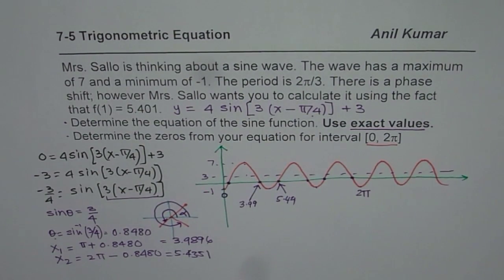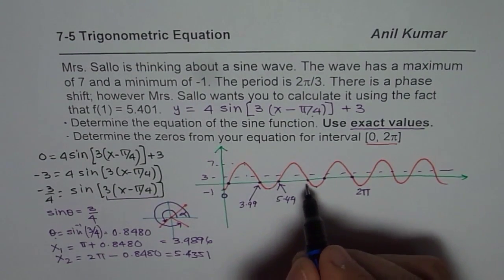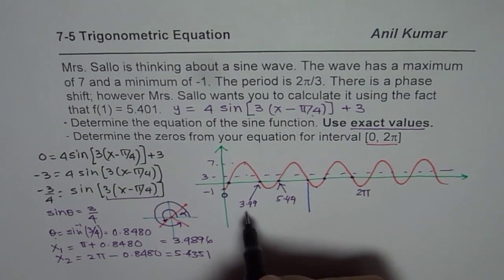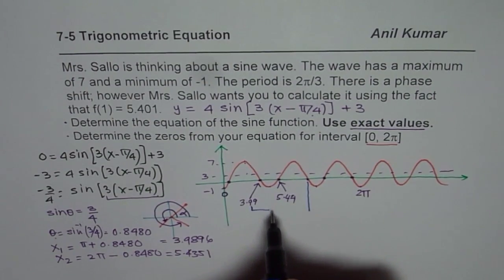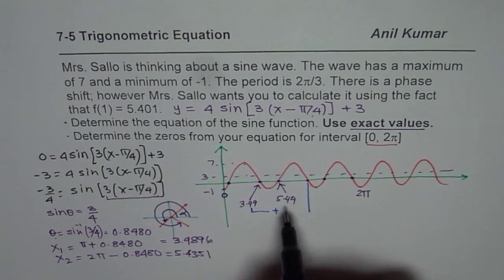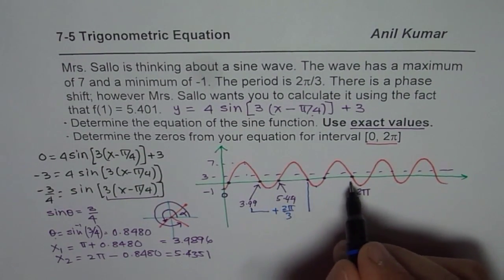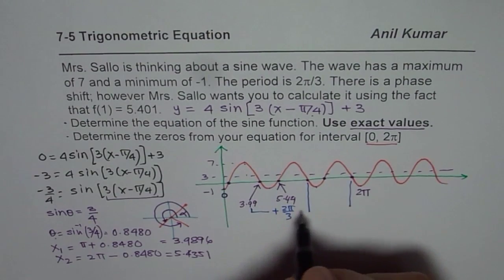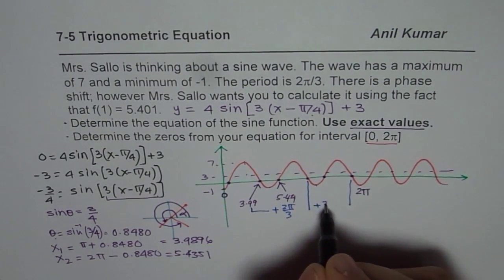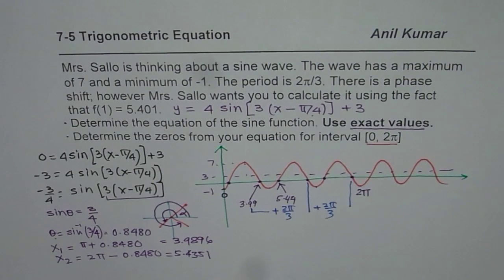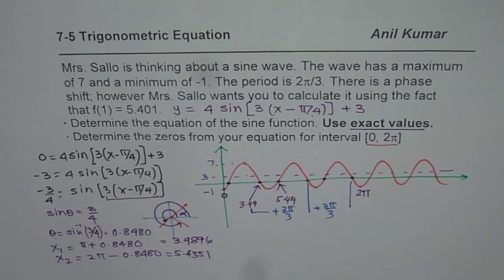So you know the time period. So what you should do here is, to get this point, this is one period away, so we should add one period which is 2π/3. Now this is the third point. Whatever you get here, add 2π/3, get this value. So you get 1, 2, 3 values.